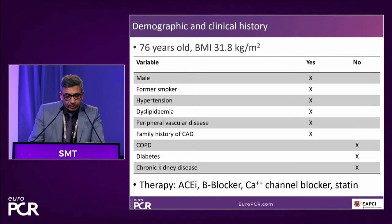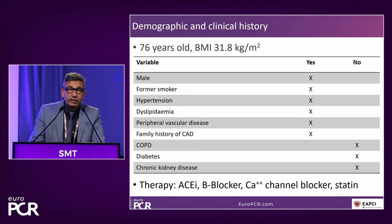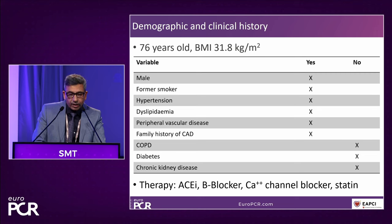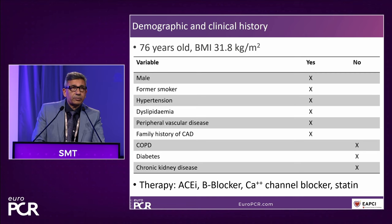This is a 76-year-old patient, a former smoker with multiple risk factors: hypertension, hyperlipidemia, peripheral vascular disease, positive family history of coronary artery disease. He does not have COPD or diabetes, and his kidney function is normal. BMI is 31.8, and his pre-test probability is about 77% for coronary artery disease. The patient has been treated for hypertension with ACE inhibitors, beta blocker, calcium channel blocker, and statin.